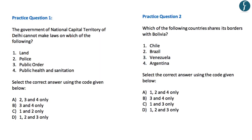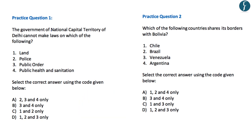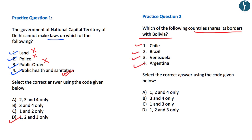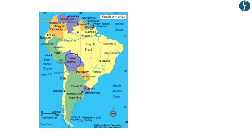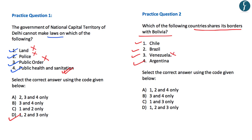Practice questions for the day: Question 1 — the government of NCT of Delhi cannot make laws on which of the following? (1) Land, (2) Police, (3) Public Order, (4) Public Health and Sanitation. The correct answer is 1, 2 and 3, i.e., option D. Question 2 — which of the following countries share borders with Bolivia? Options: Chile, Brazil, Venezuela, Argentina. Brazil, Paraguay, Argentina, Chile and Peru border Bolivia, whereas Venezuela does not. The correct answer is 1, 2 and 4, i.e., option A. Question 3 — the first hour of every sitting of parliament is referred to as zero hour? No, it is question hour. Question hour takes place first, then zero hour. Both statements are incorrect, so option D is correct. Question 4 — Black Buck is listed as vulnerable per IUCN red list? No, it is least concerned. Black Buck is the state animal of Punjab — correct. So option B (statement 2 only) is correct.